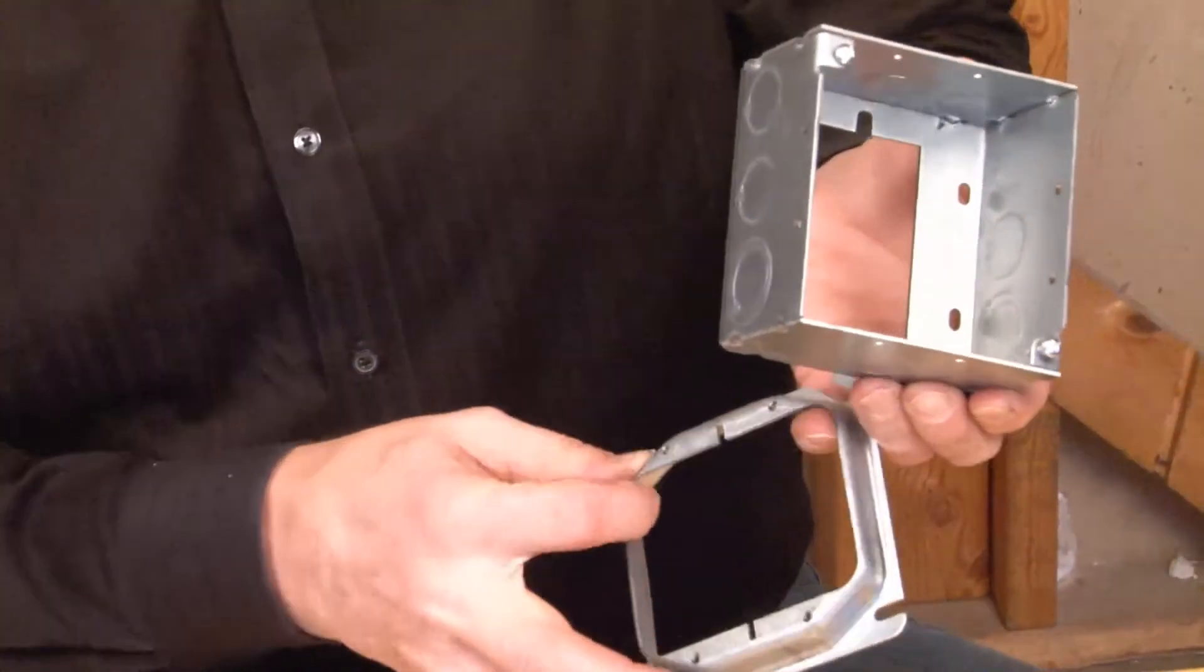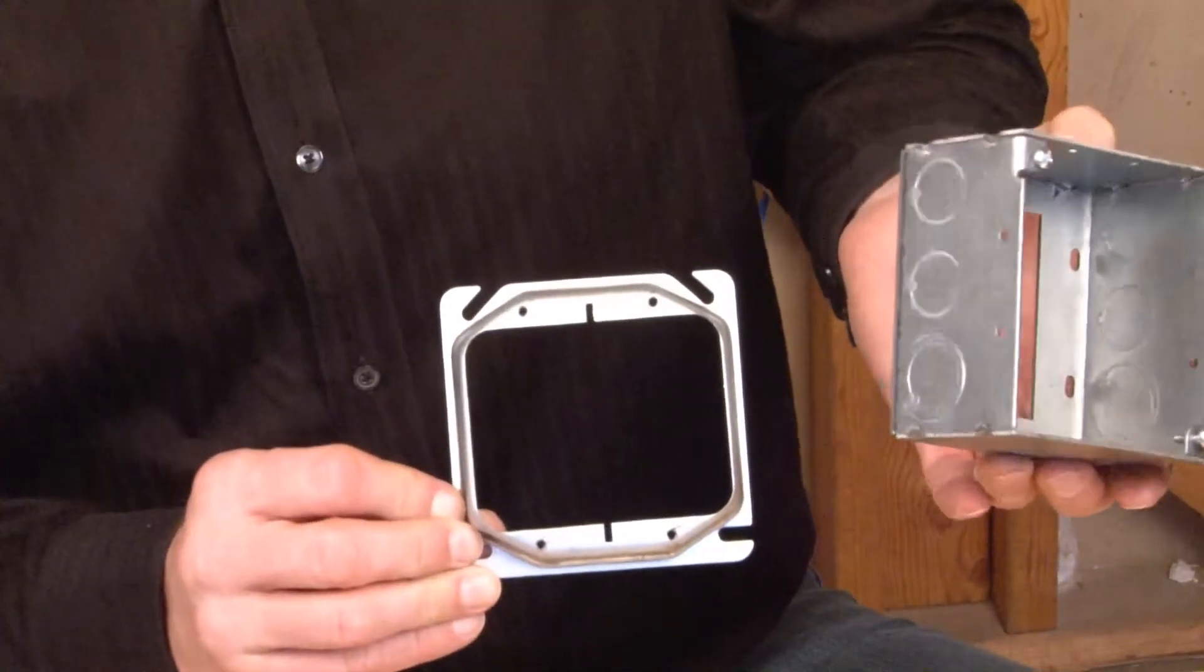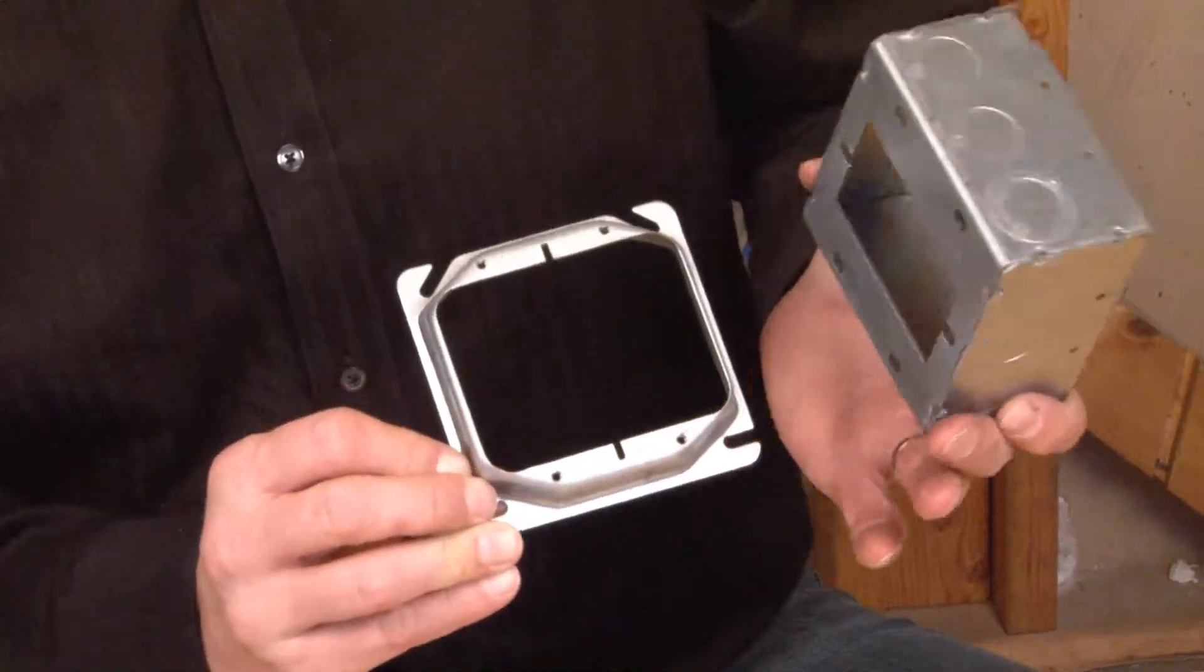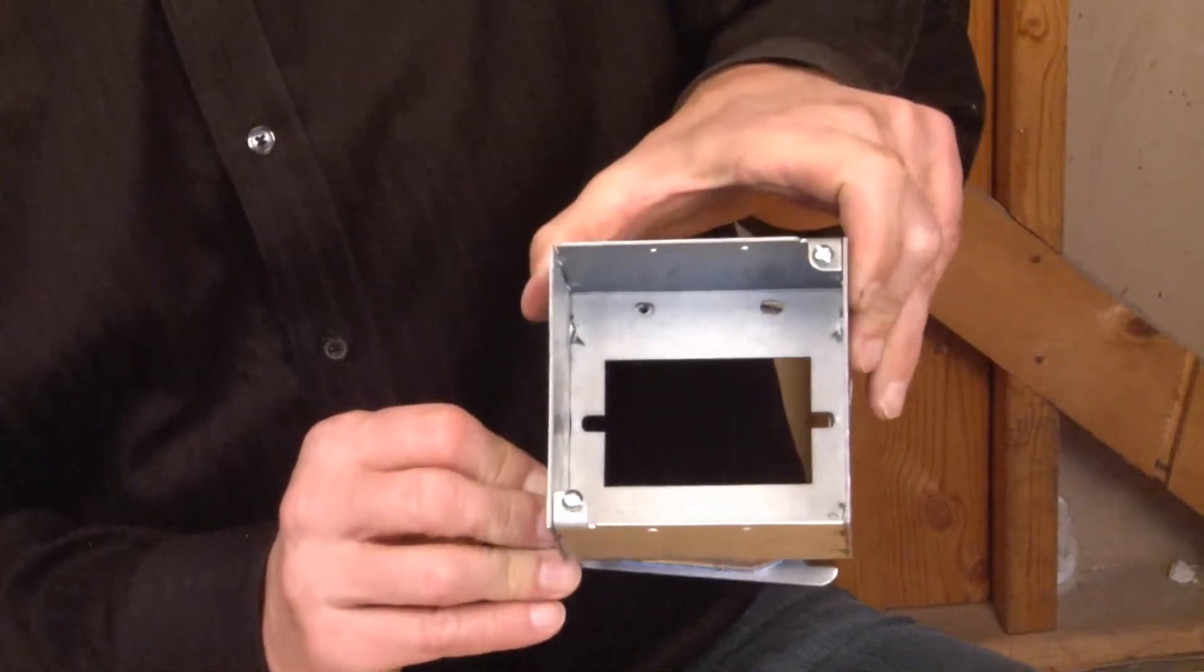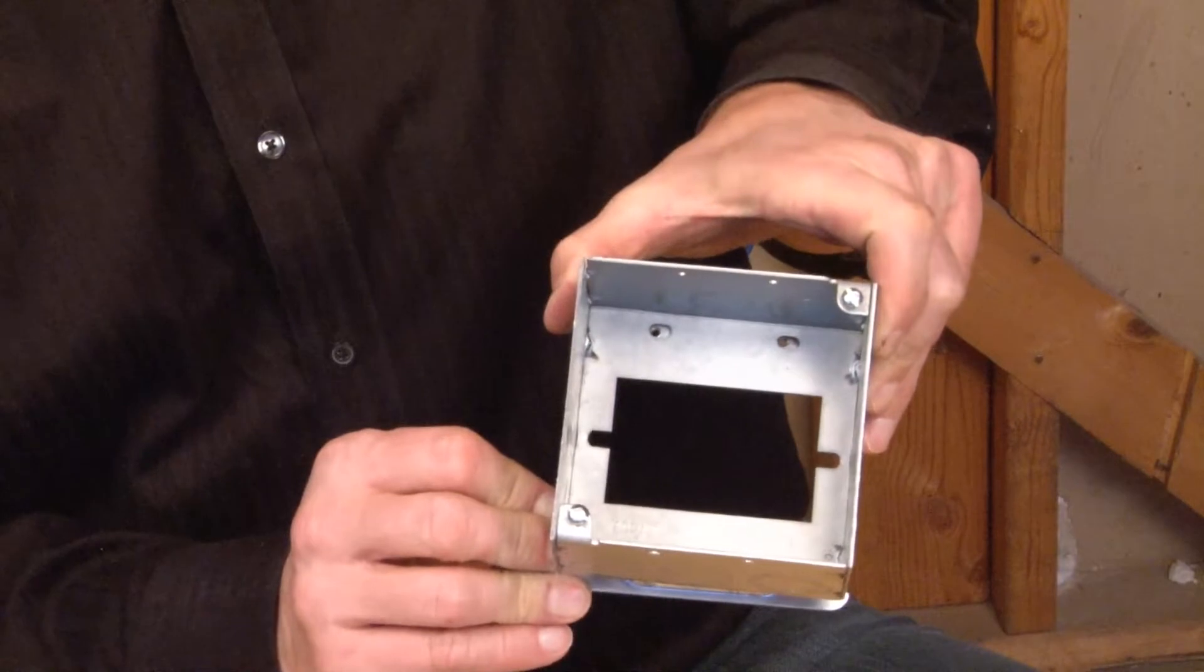If you have a two-gang plaster ring in the wall, there are four holes in the back that align and can be attached to it to create extra wire capacity.